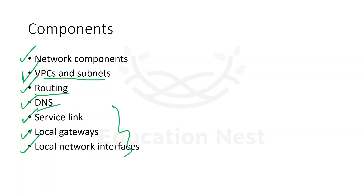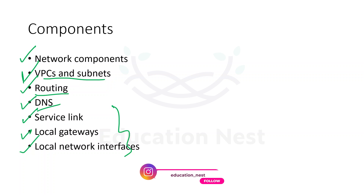For DNS, EC2 instances in Outpost subnets can use Amazon Route 53 DNS service to resolve domain names to IP addresses. Route 53 supports DNS features such as domain name registration, DNS routing, and health checks for instances running on Outpost. Both public and private hosted zones are supported for routing traffic to a specific domain.